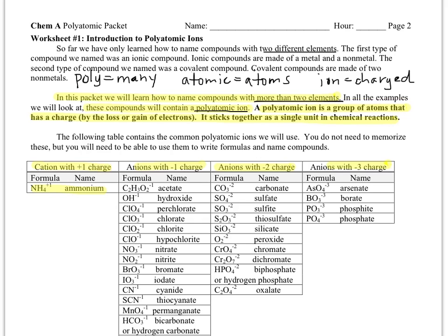Now if we break down the term polyatomic ion, poly means many, atomic means atoms, and ion means charged. So that's basically your definition. A polyatomic ion is a group of many atoms combined together that have a charge.